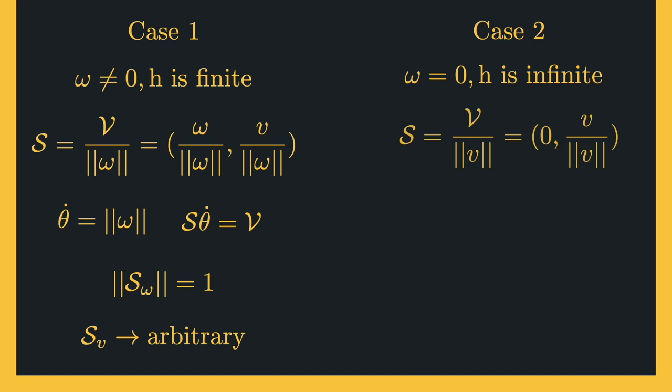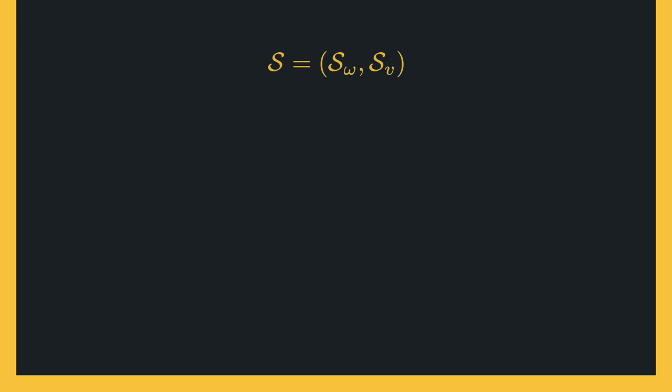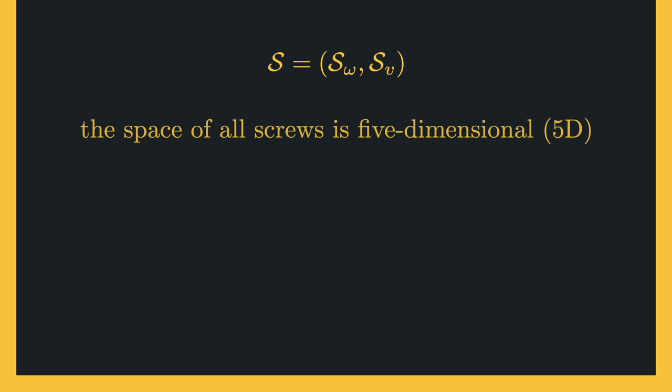Case two is when there is no rotational motion: omega equals zero and the pitch h is infinite. In this case, the motion is purely linear with no rotation. The angular component is zero and the linear part is a unit vector. The twist is normalized by the length of the linear velocity vector. Theta-dot is the linear speed along the screw axis such that screw axis times theta-dot equals the twist. The angular component is zero and the norm of the linear component is 1 since we normalized it.